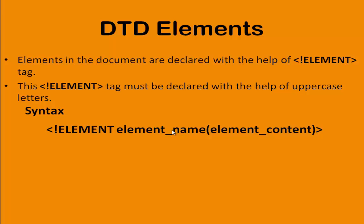In order to construct this element tag, we have a certain syntax to follow. First, the element keyword, next comes the element name — any name that can be provided for your tag — and within the parentheses we can give the element content. Element content means, consider this is my root element; inside my root element, how many child elements must be present can be mentioned within the parentheses.